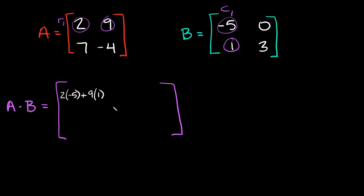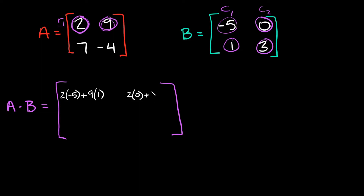Now where do you go from here? You still stick with your first row, and then we're going to go to column two. So again, you're going to go down the row, down the column. So we're going to do two times zero, plus going down the row, down the column, nine times three.